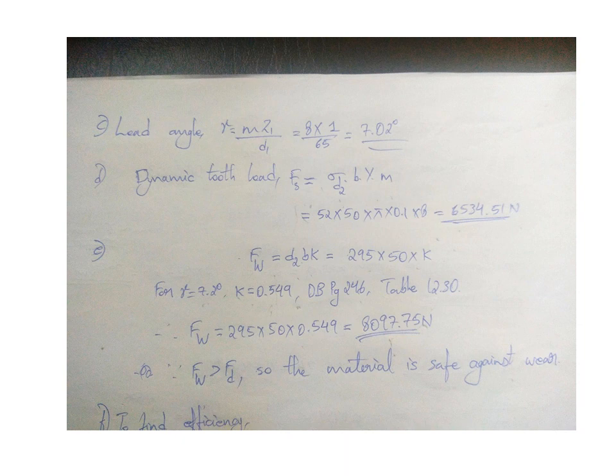That is we get 6534.51 newton. And wear resistance Fw equals d2 times b times K. K value can be obtained from the data book page 246 table 12.30. For gamma equals 7.2 degree, K equals 0.549. So this wear resistance value will always be greater than the dynamic load, then only the material is safe against wear.